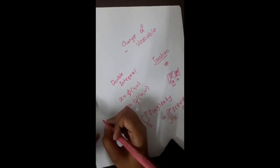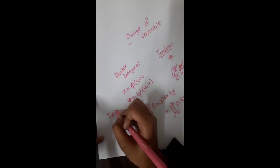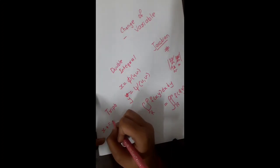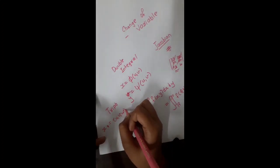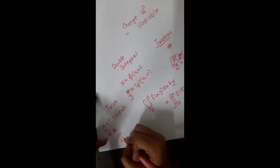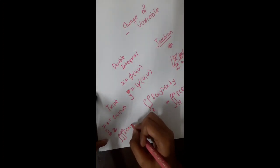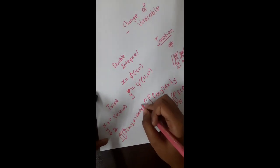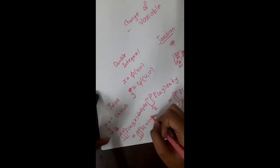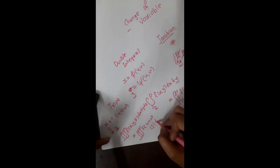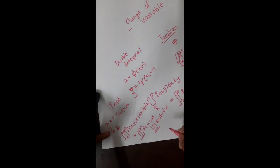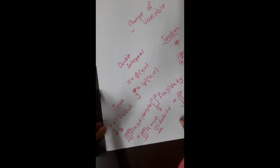In the triple integral there is just a slight variation. For example, if x, y, and z are all functions of u, v, and w, then the whole integral ∫∫∫ f(x, y, z) dx dy dz changes to a new function of u, v, w multiplied by the Jacobian of those terms, then integrated du dv dw. So nothing extra — just the Jacobian comes in as a multiplier.